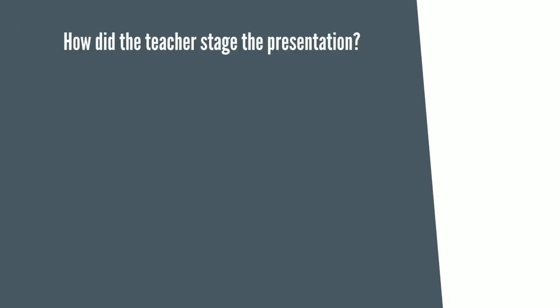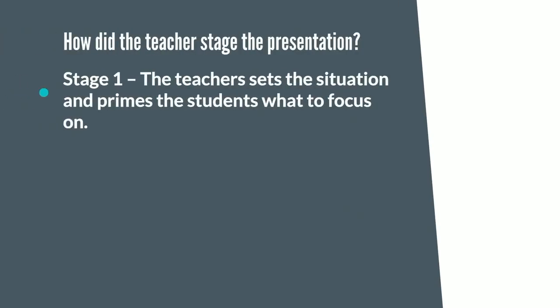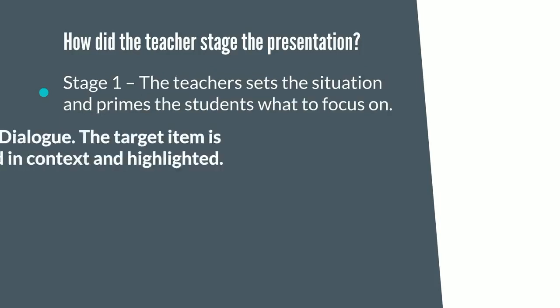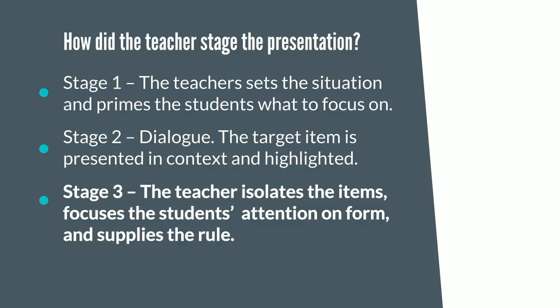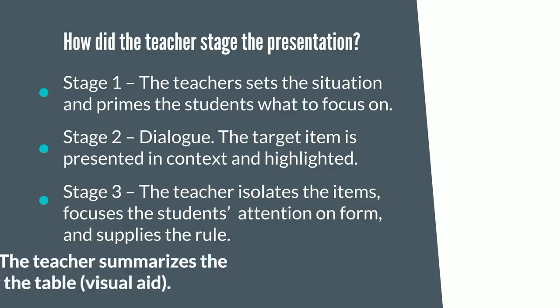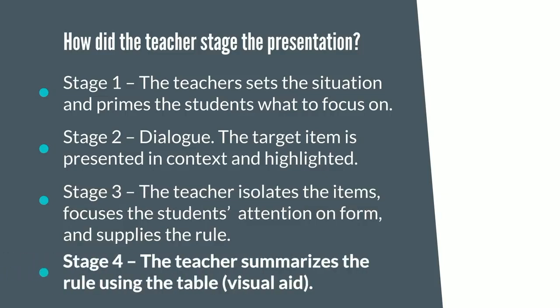How did the teacher stage the presentation? Stage 1: The teacher sets the situation and primes the students on what to focus on. Stage 2 — Dialogue: The target item is presented in context and highlighted. Stage 3: The teacher isolates the items, focuses the student's attention on form, and supplies the rule. Stage 4: The teacher summarizes the rule using the board as a visual aid.